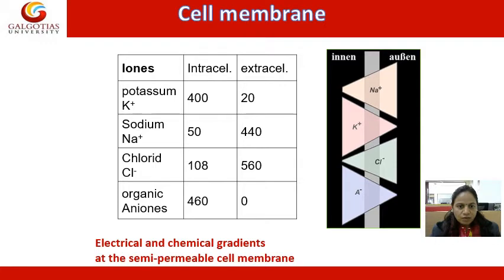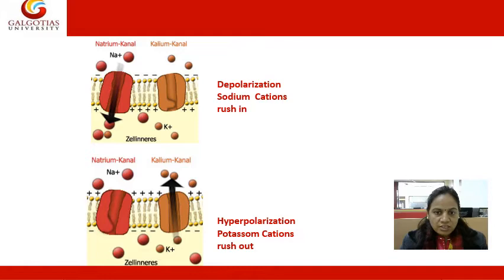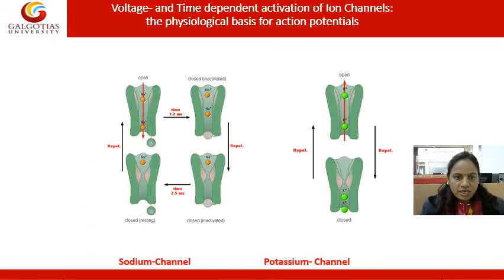We can see how potassium, sodium chloride, and organic ions are present inside and outside of the cell membrane, creating the electrical and chemical gradient at the semi-permeable cell. Depolarization involves sodium cations rushing in through the phospholipid bilayer. Hyperpolarization can also be seen, where potassium ions rush out from inside the cell membrane.